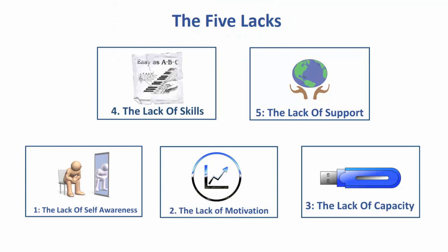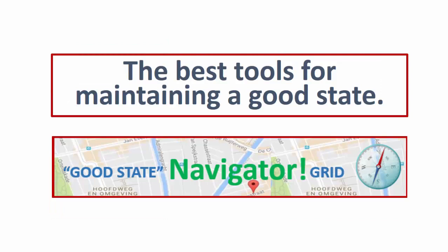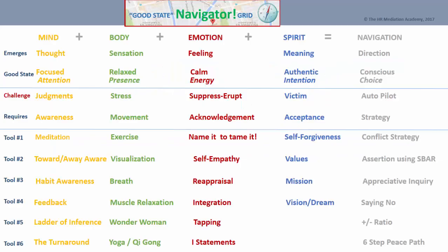We already know from our exploration of the five lacks that the lack of awareness of our body, our emotions, our mind, and our spirit is a huge challenge to overcome. What you are now going to discover in the Good State Navigator Grid are the best tools for maintaining a good state.